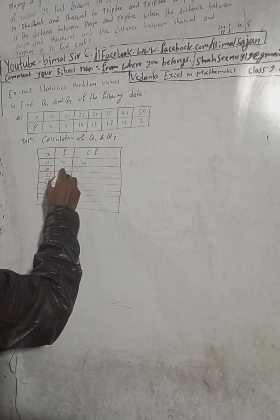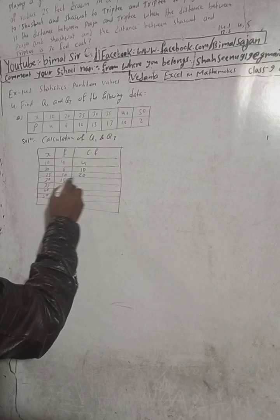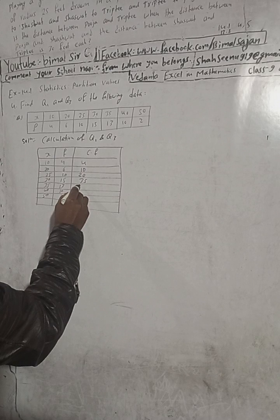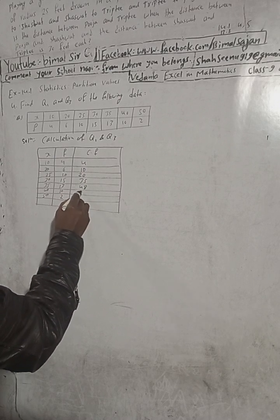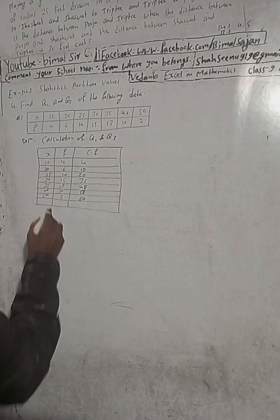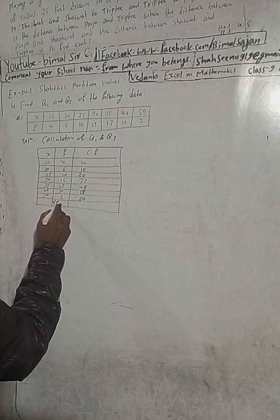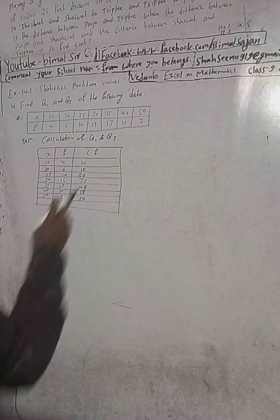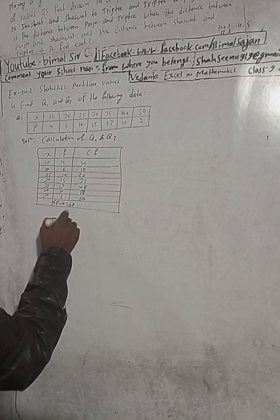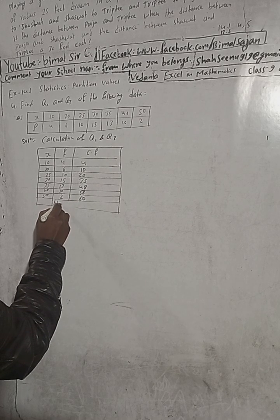Now computing the cumulative frequencies: 4, then 4 plus 6 equals 10, then 10 plus 10 equals 20, then 20 plus 15 equals 35, then 35 plus 13 equals 48, then 48 plus 10 equals 58, then 58 plus 2 equals 60. So n is equal to 60.